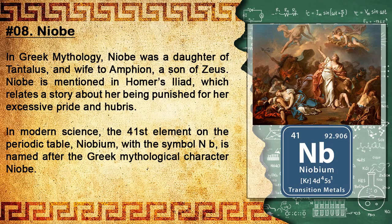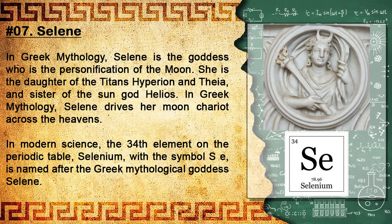Number 8: Niobe. In Greek mythology, Niobe was a daughter of Tantalus and wife to Amphion, a son of Zeus. Niobe is mentioned in Homer's Iliad, which relates a story about her being punished for her excessive pride and hubris. In modern science, the 41st element on the periodic table, niobium, with the symbol Nb, is named after the Greek mythological character Niobe.